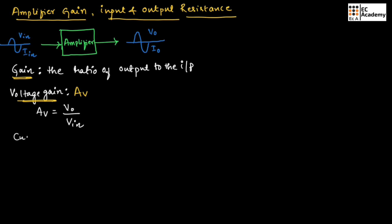Now let us understand current gain. Current gain is represented as AI, and is defined as AI equals I_naught divided by I_in — the ratio of output current to input current.